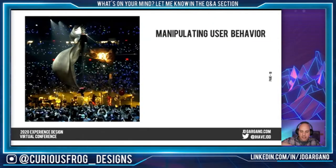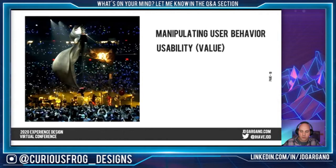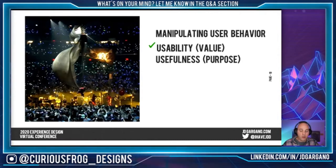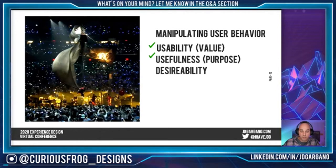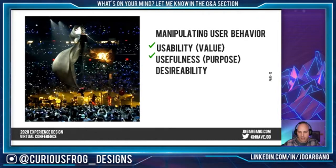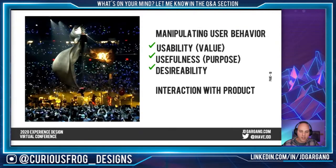So according to the last definition we had, let's see if this concert checks off some of those boxes. Experience design is manipulating user behavior through usability — in this case, the value you get from going to that concert. That definitely checks that off. How about the usefulness or purpose? Well, the whole purpose for the band was to interact with their fans in a way that's not normally done. And the desirability — you can guarantee that the next time Phish comes around, you're going to try to get tickets. New Year's Eve is the most sought-after and highest-priced ticket, because they always have this gag that goes on. So a hundred percent, experience design all around.